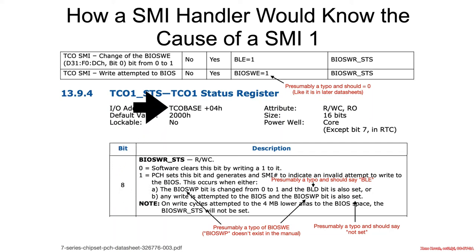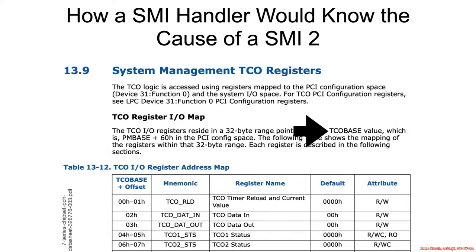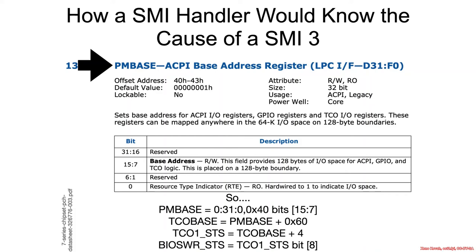So where is this status bit found? Where is this TECO 1 status register? It's at TECO base plus 4. Where's TECO base found? You search around for TECO base and you'll find this line that says TECO base value, which is PM base plus 60. PM base is the ACPI base address register, which is at the LPC device, bus 0, device 31, function 0, offset 40. So you just go to PM base — which is at B0D31F0 offset 040 — and take bits 15 to 7, that'll give you the PM base, then add 60 to it, and that'll give you TECO base.